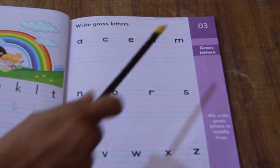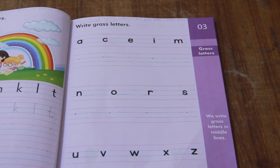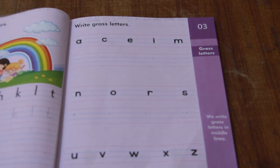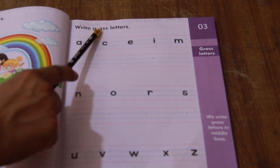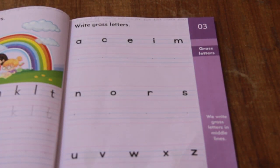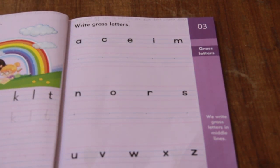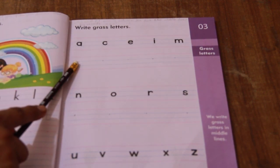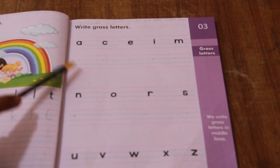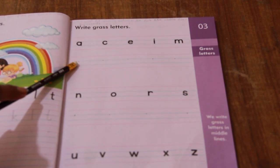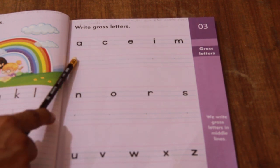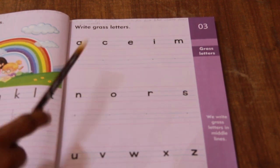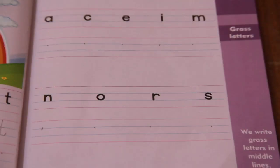Page number 3. Today we are going to do our grass letters. Read the question: Write grass letters. What are grass letters? Grass letters fit exactly between the two blue middle lines. You can see two blue lines over here. The letters which are written on these two blue lines are called grass letters.